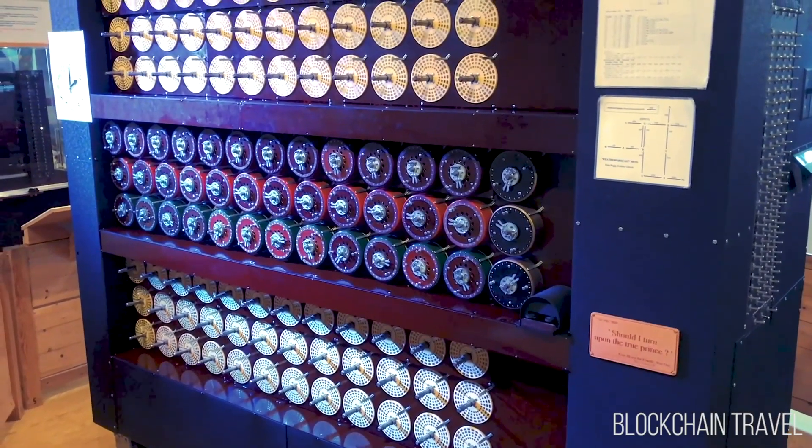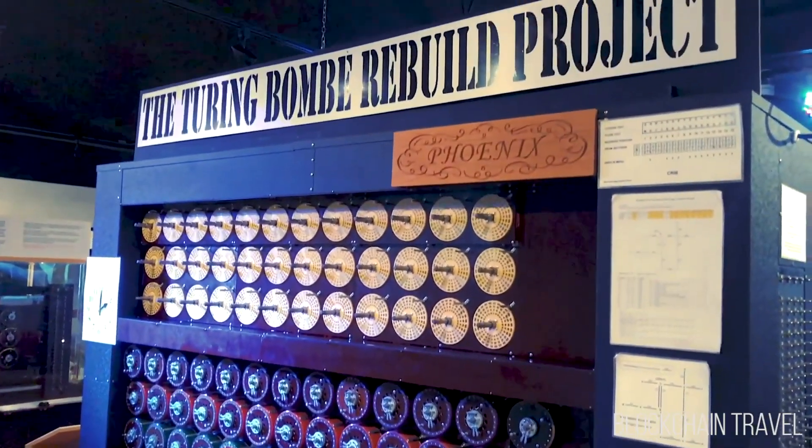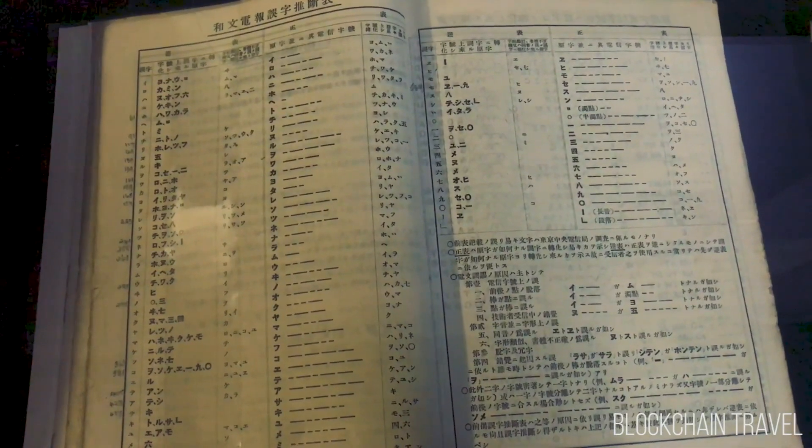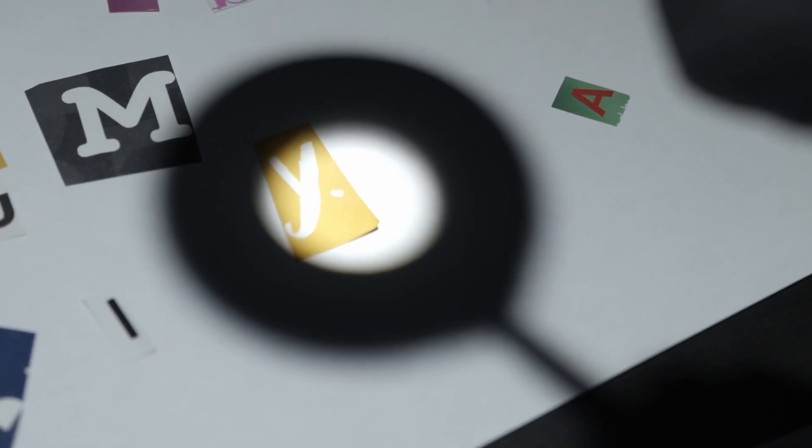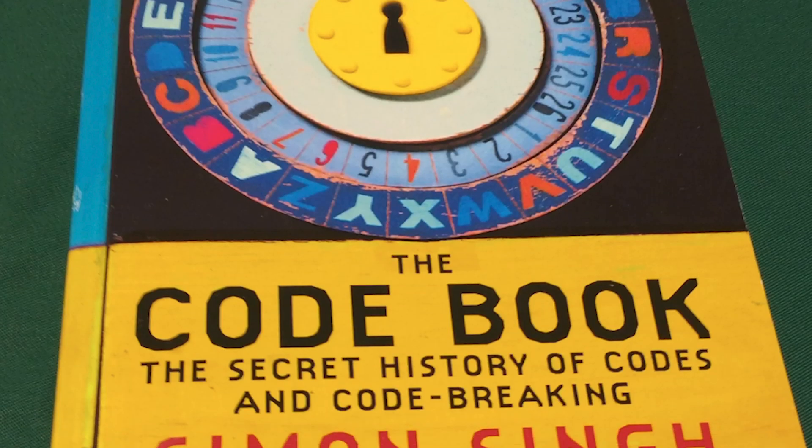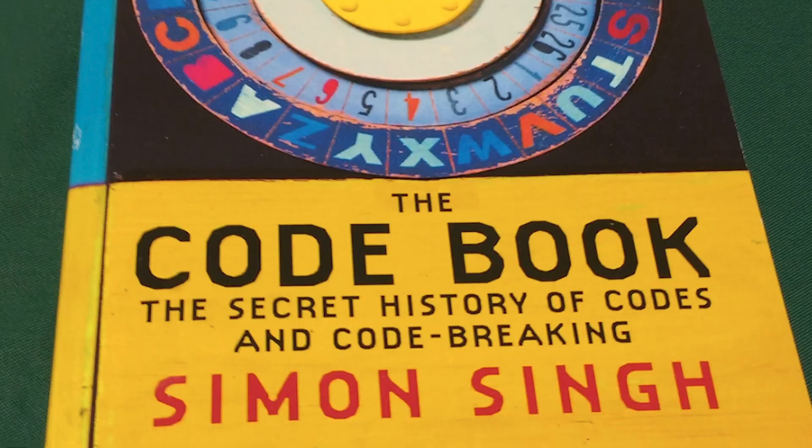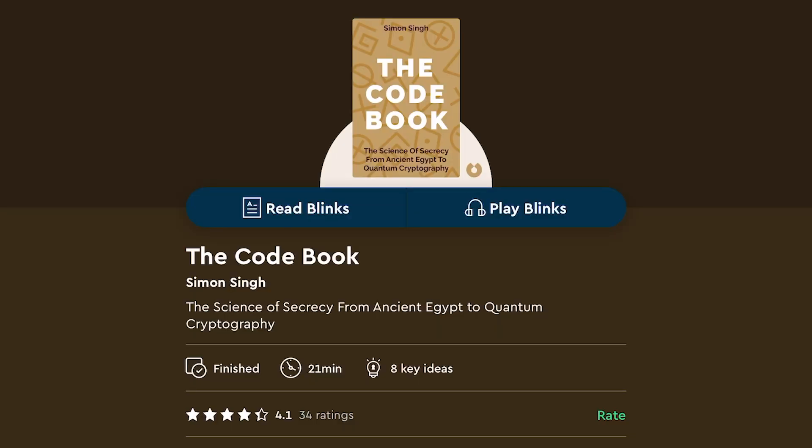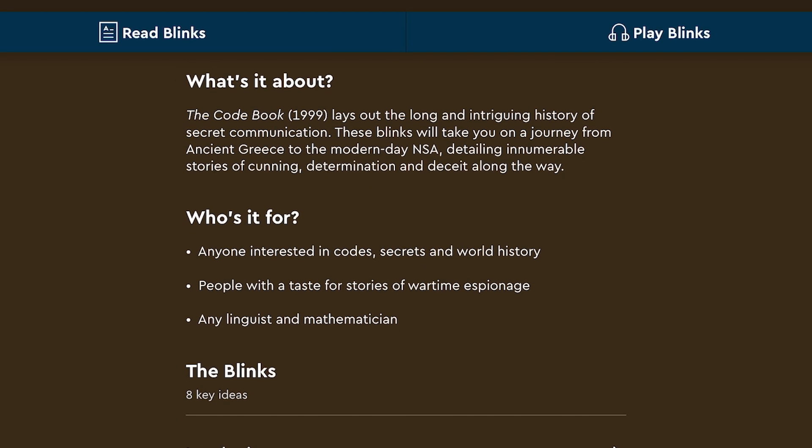We've just heard about RSA cryptography from John, but this is of course not the first method humans have used to encrypt secret messages.